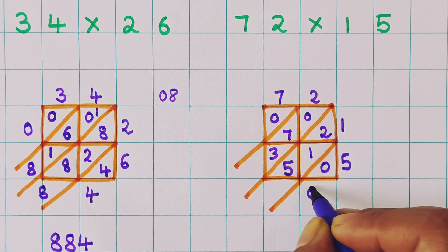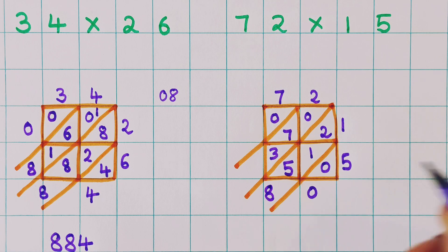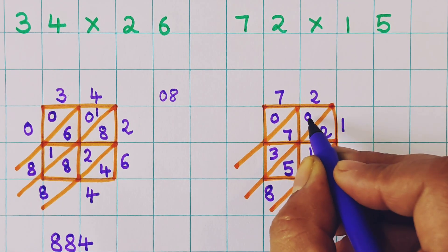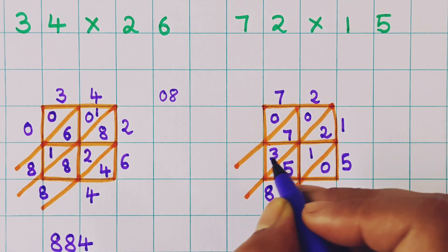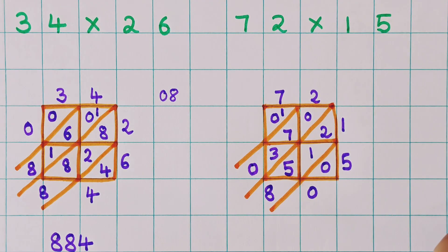0 plus nothing, 0. 2 plus 1, 3. 3 plus 5, 8. So here I will write 8. Now next 0 plus 7, 7 plus 3, 10. So 1 I will write as a carry over and 0 I will write here.